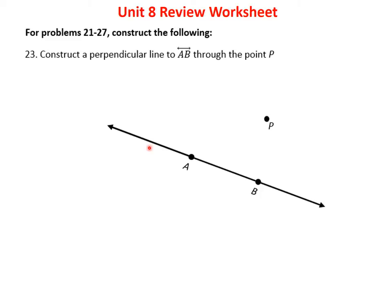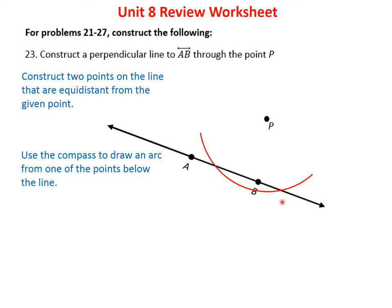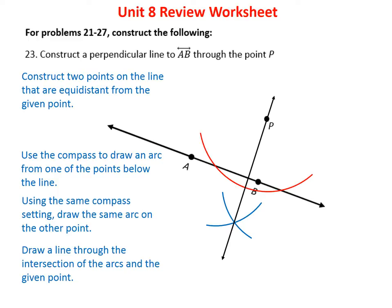Problem 23: construct a perpendicular line to segment AB through point P. From point P, open the compass and draw an arc that cuts the line at two equal-distance points. Then, keeping the compass the same length, draw an arc from each of those two points toward the opposite side. The two arcs intersect, and drawing a line from P through that intersection gives the perpendicular.